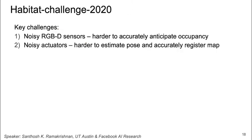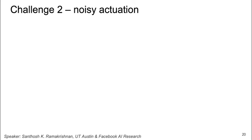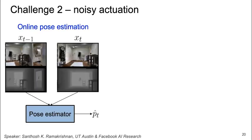We deploy our anticipation model on Habitat Challenge settings. We have to address two key challenges: noisy RGBD sensors, which can impact the anticipation accuracy, and noisy actuators, which can impact pose estimation and map registration quality. We address noisy RGBD inputs by training the occupancy anticipation models end-to-end under noisy conditions, which leads to robust occupancy anticipation. To deal with noisy actuation, we learn an online pose estimator that keeps track of the agent's position over time.